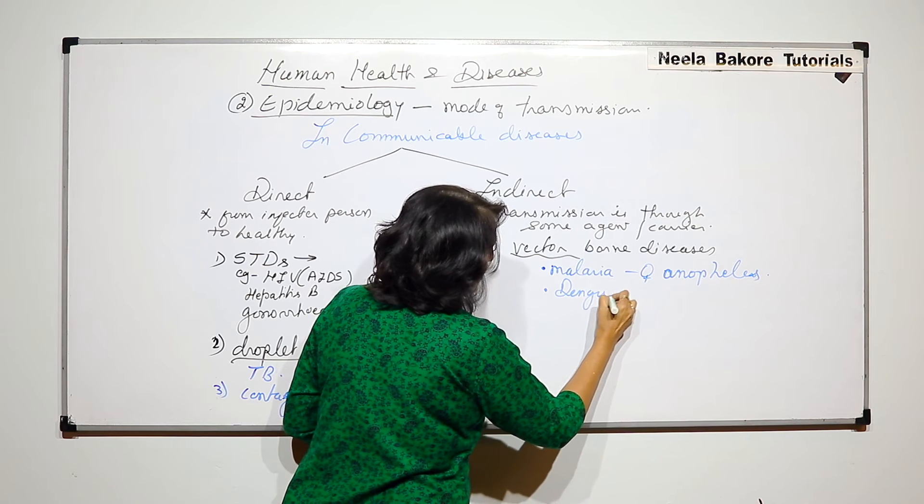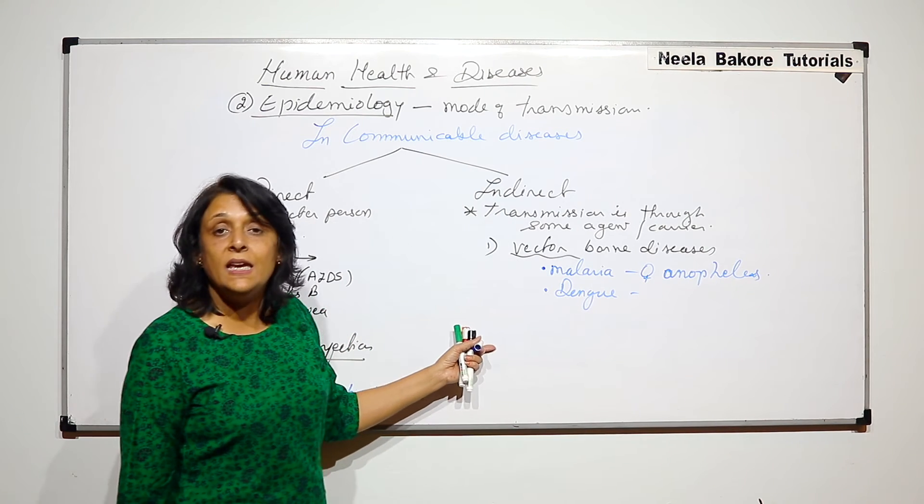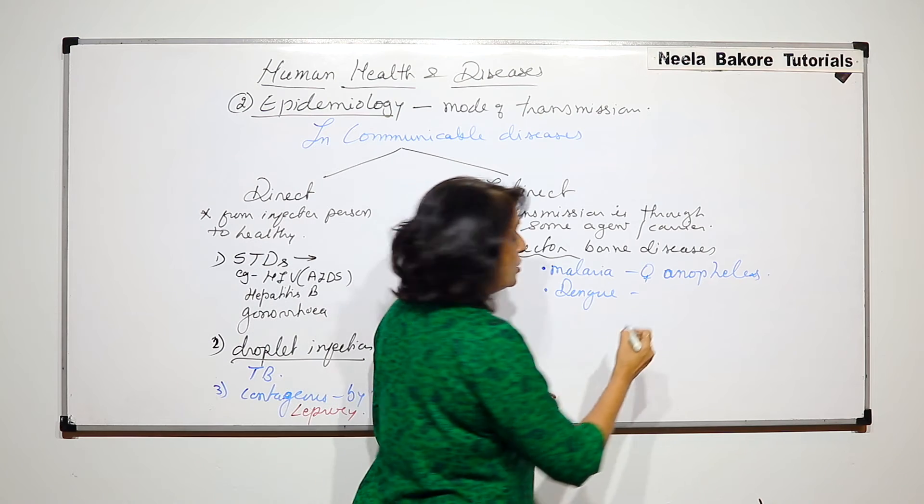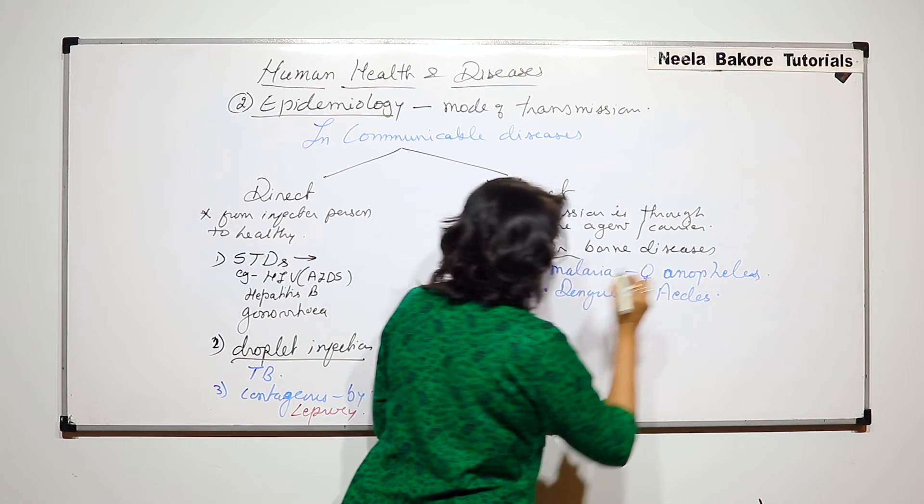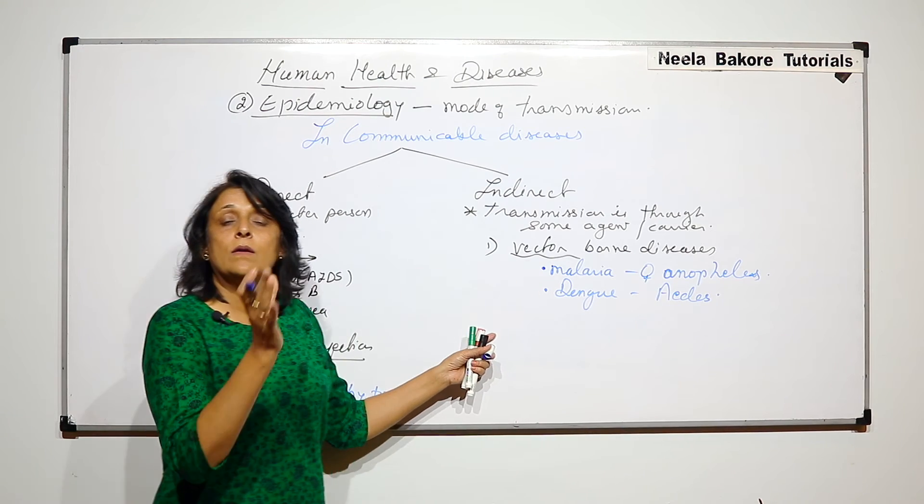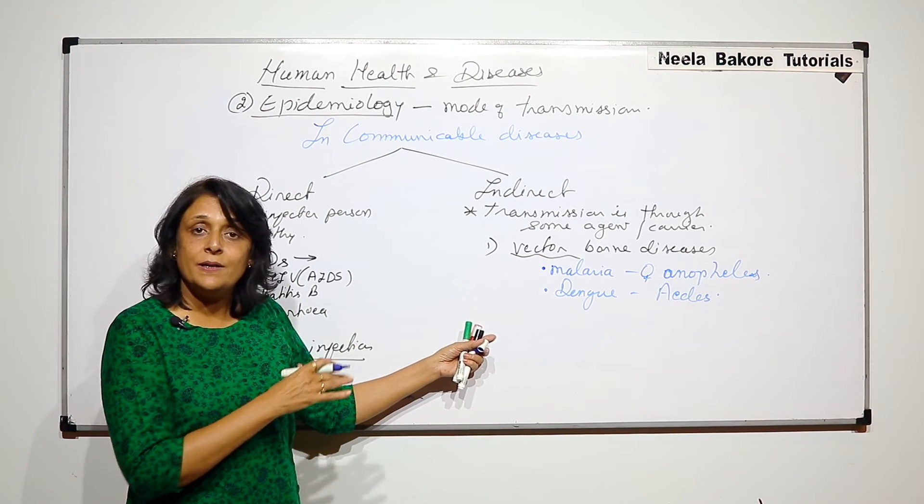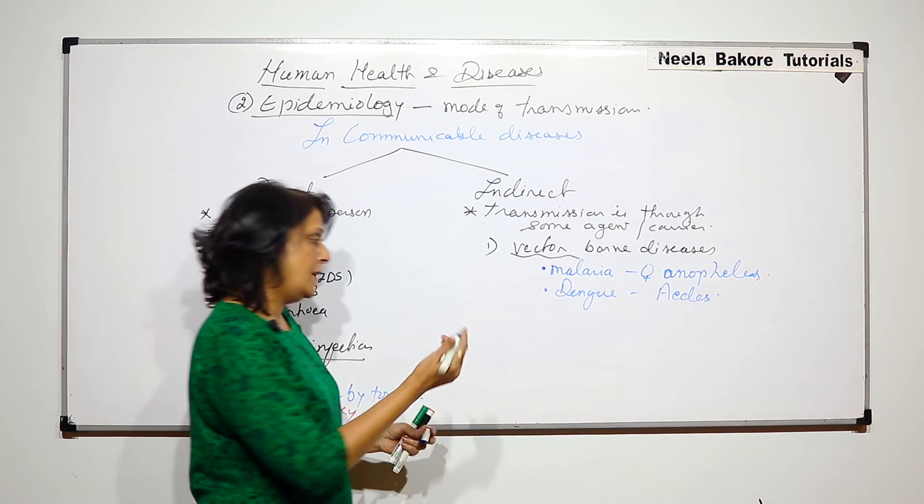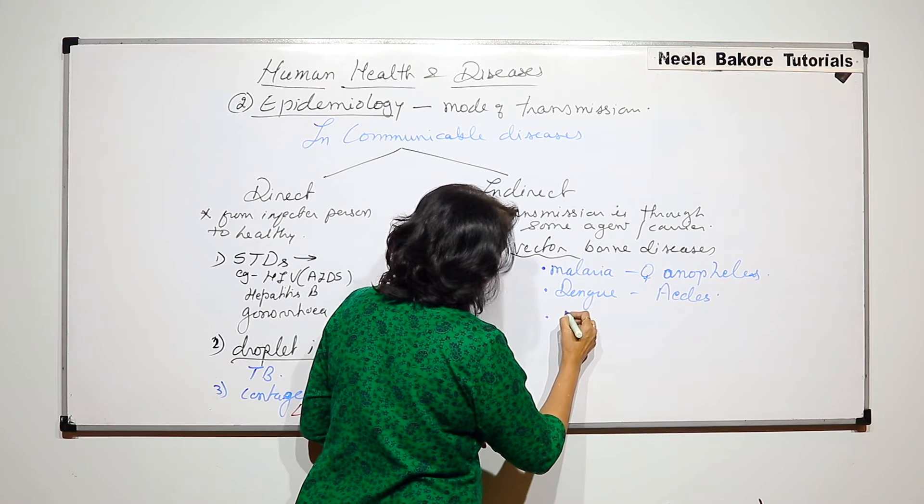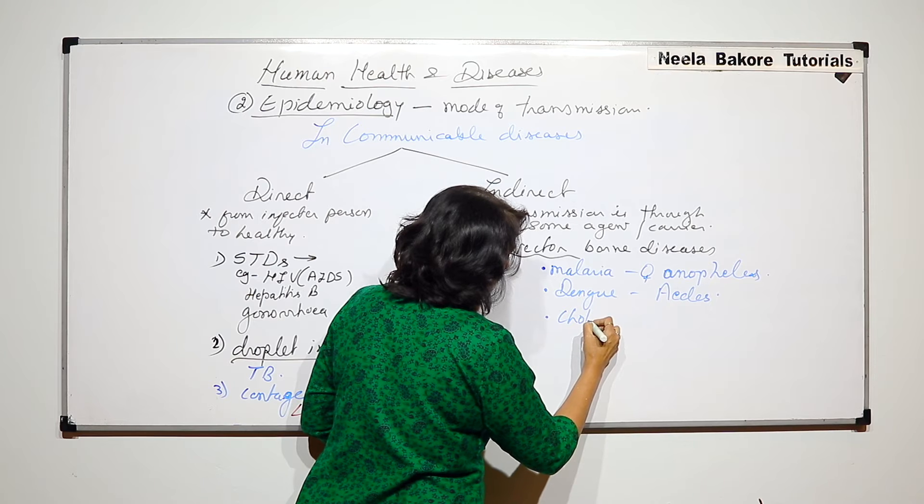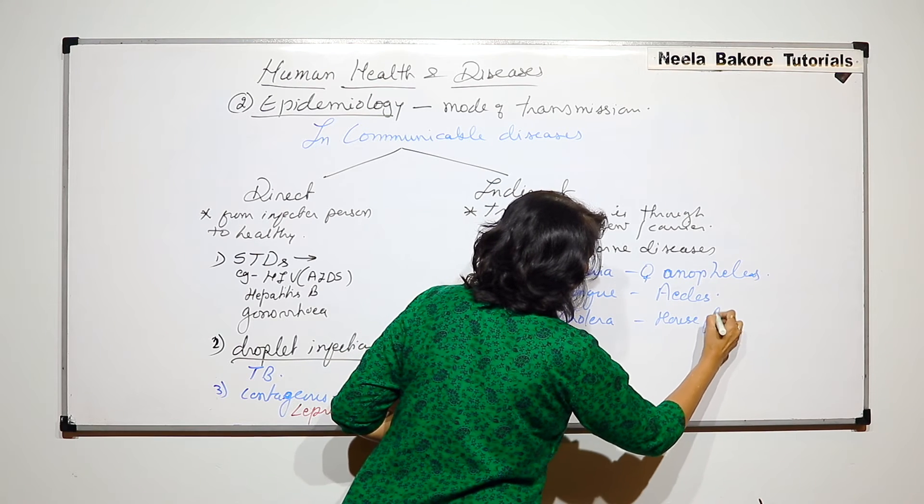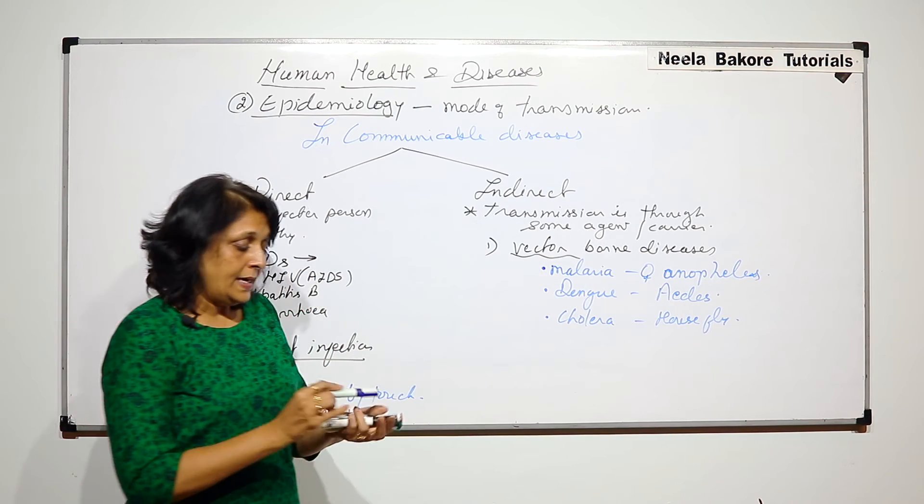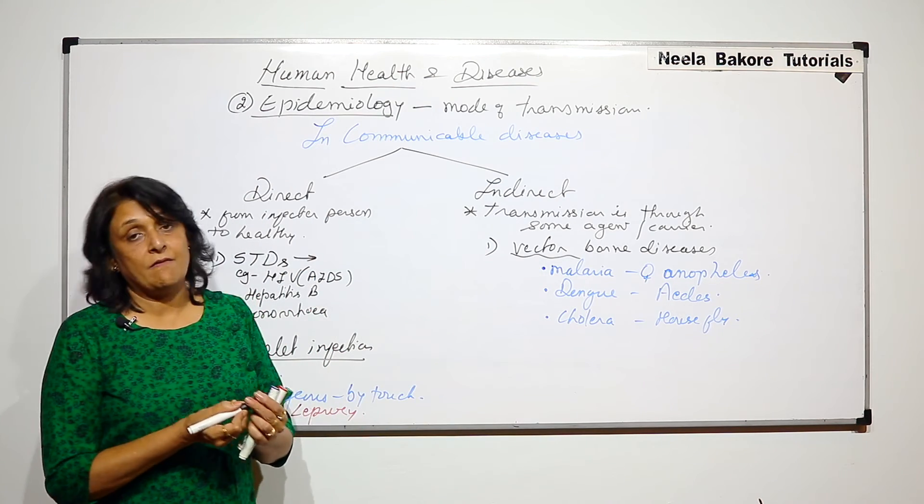Dengue or some people call it dengue also. It spreads through another type of mosquito which is called Aedes. This is like transmitted with the help of a vector. We can take one more example that is cholera. That is by housefly. Then one it is vector-borne.